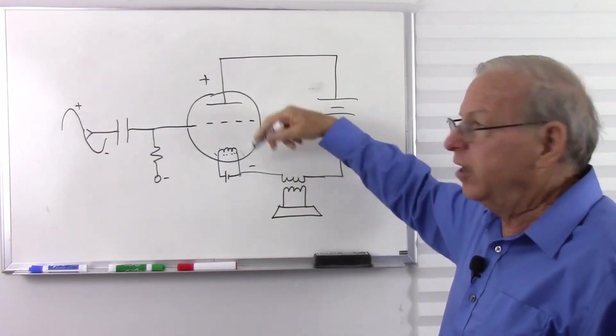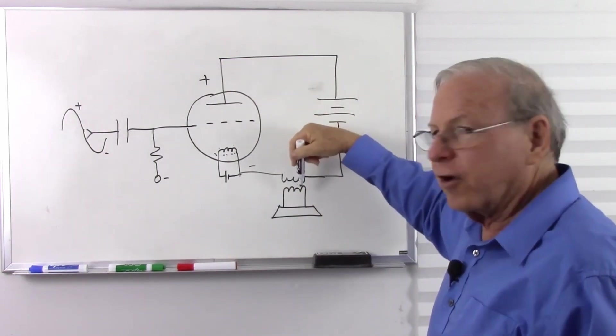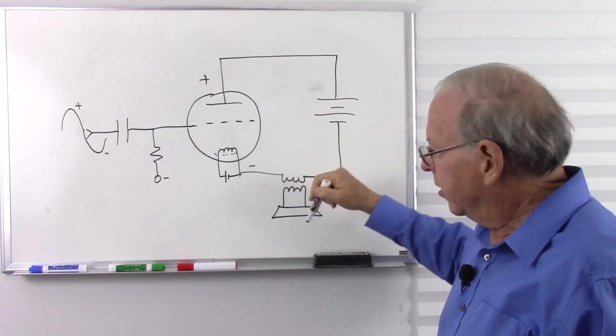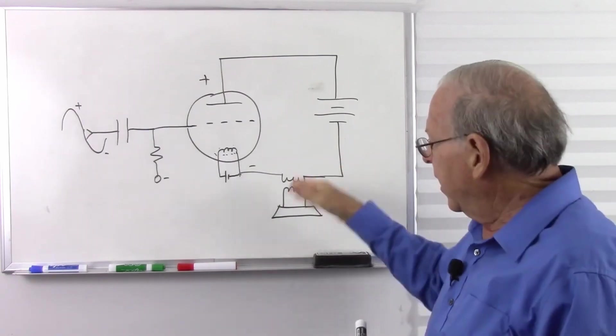There we go. And there's the output as the current varies in this loop. We get a varying current in this transformer, which varies the current in the speaker. And there you go, we have amplification.